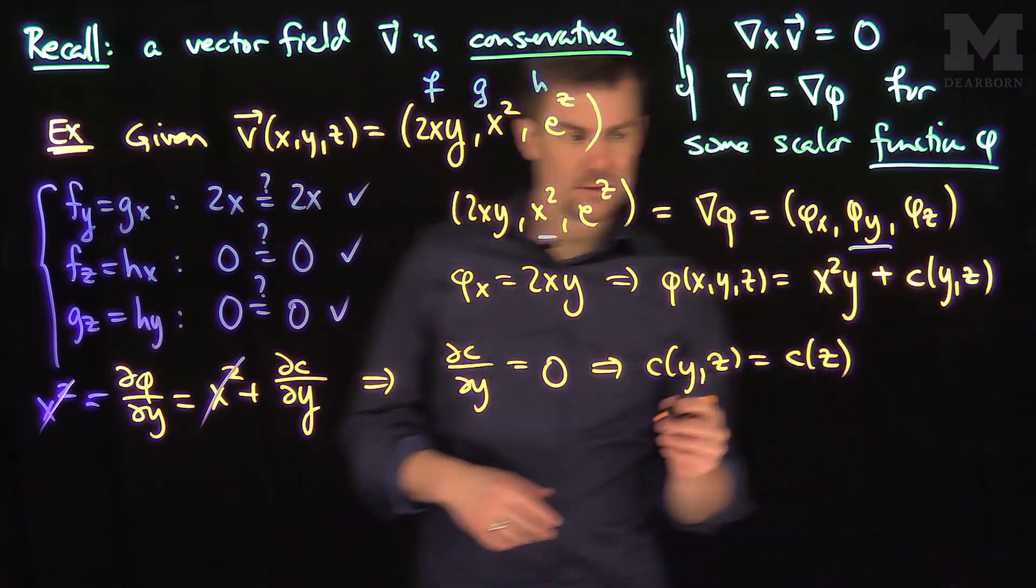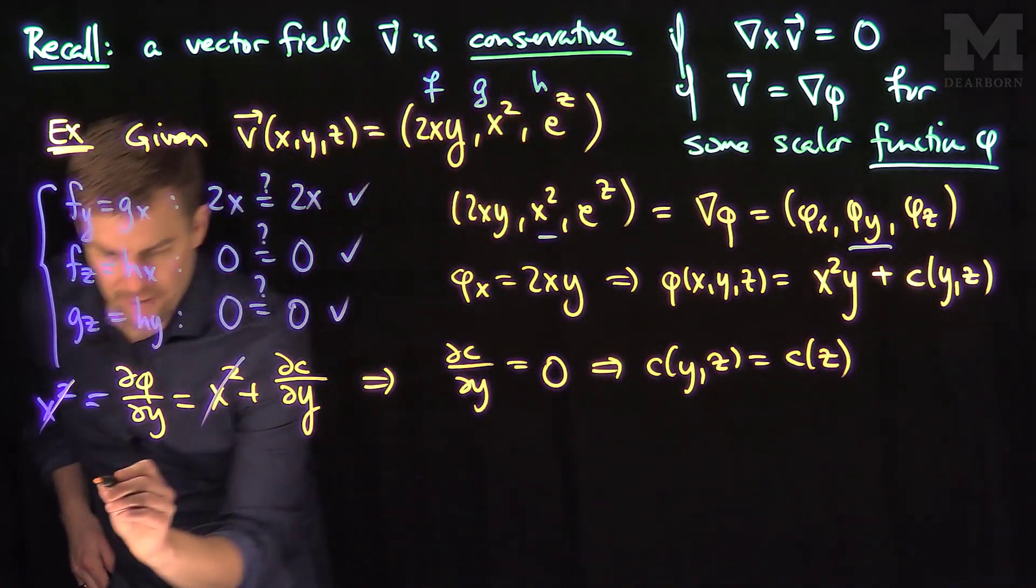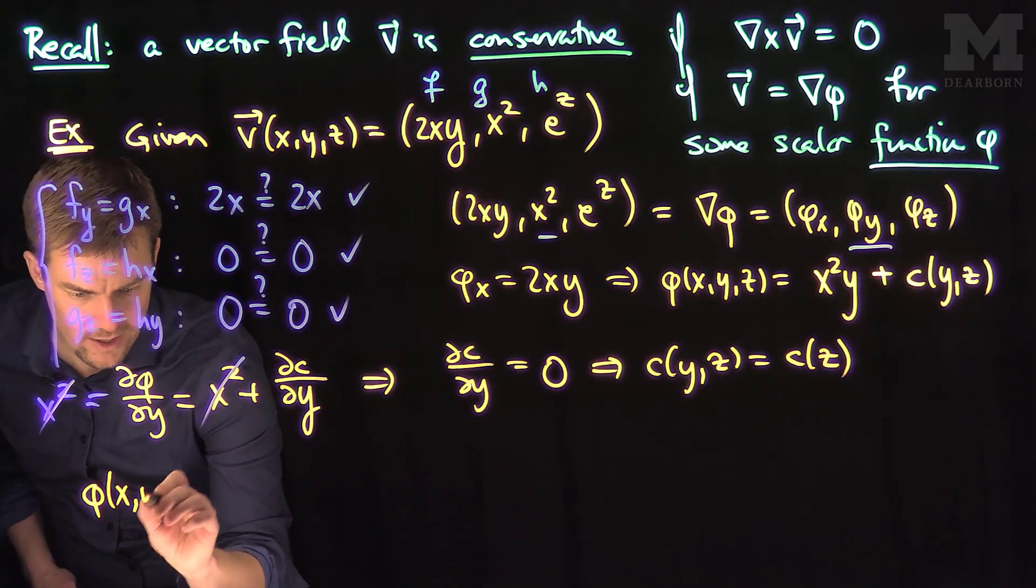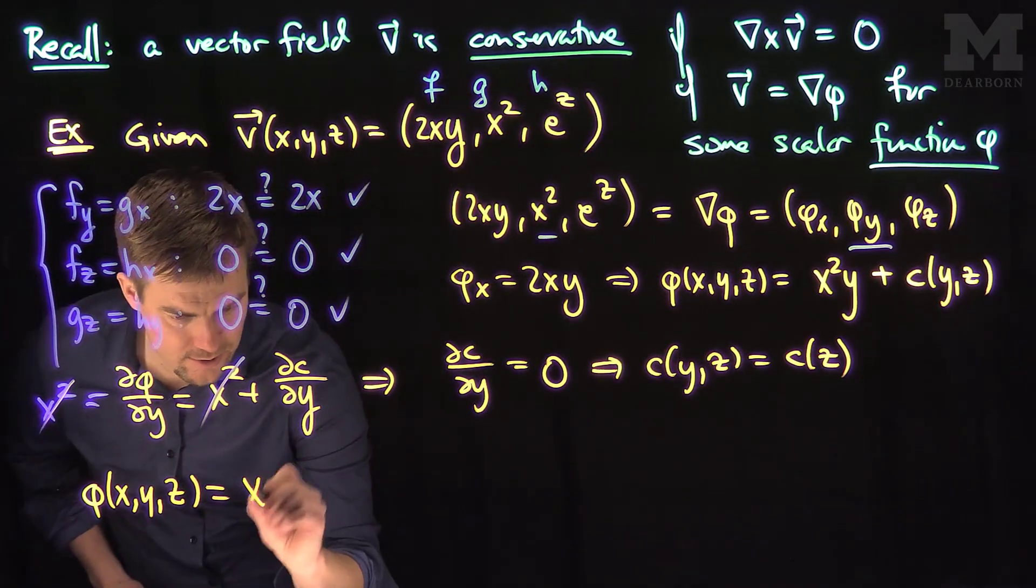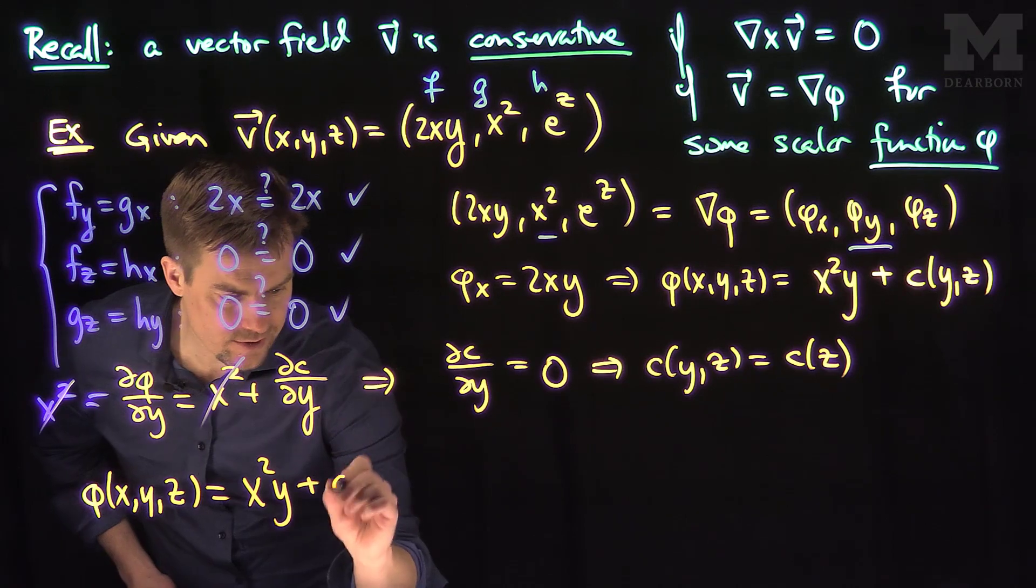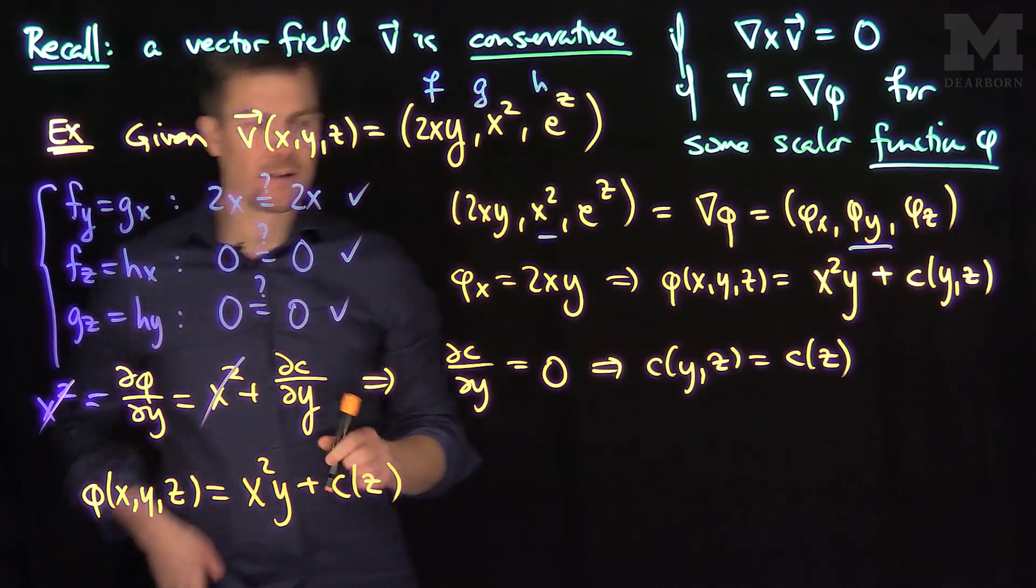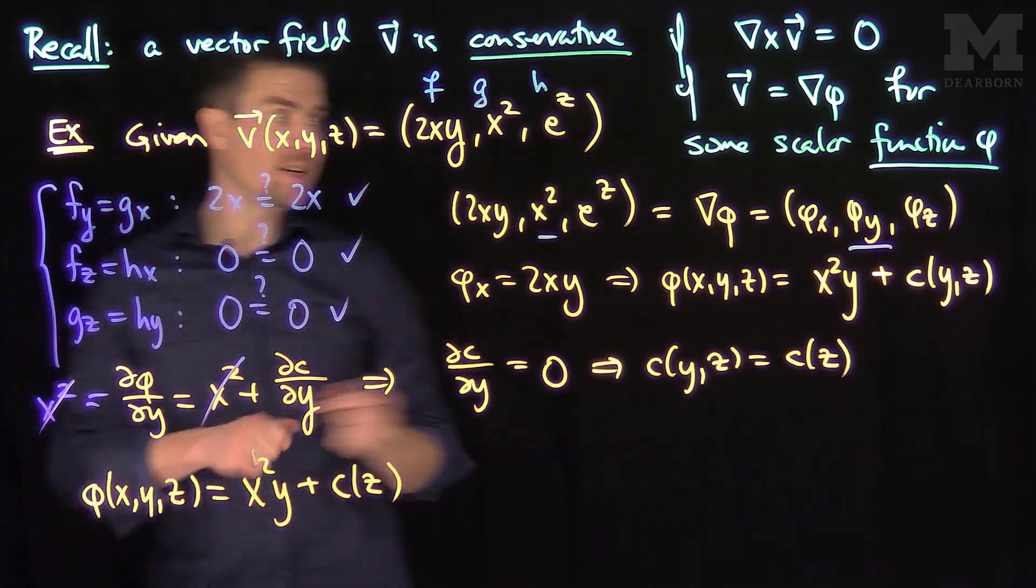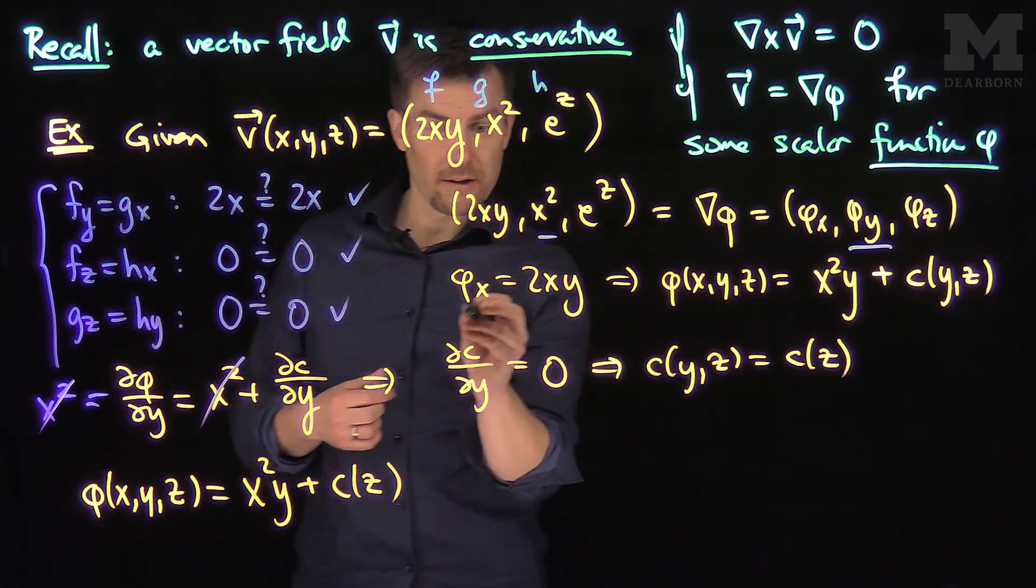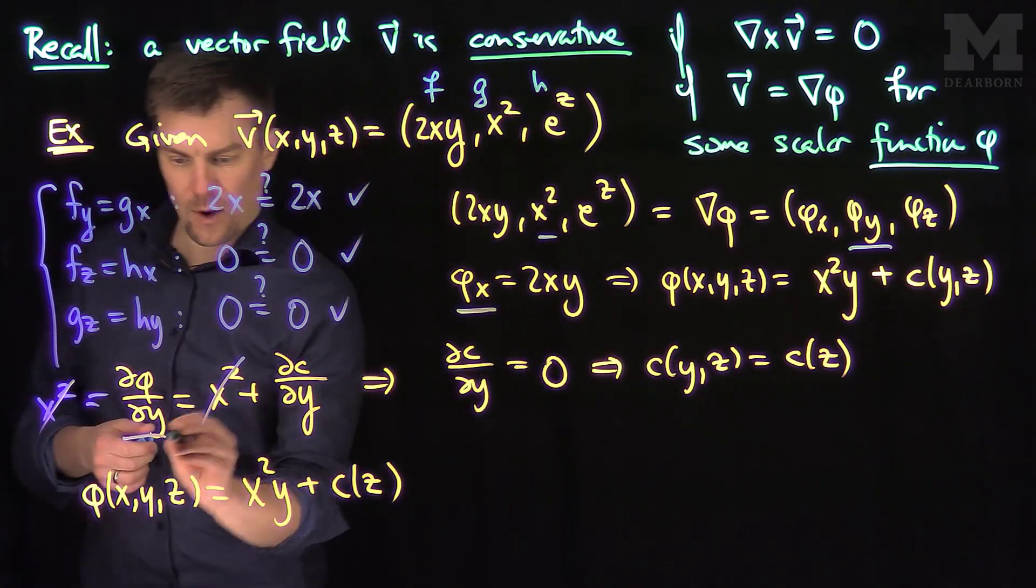Now, I use my final statement. So I can update my phi. Phi of XYZ is now updated to X squared Y plus a constant which depends on Z. The final step in this is that I'll differentiate this new updated phi with respect to Z. That's the only thing I haven't done yet. I looked at phi X and I looked at phi Y. So finally I look at phi Z.